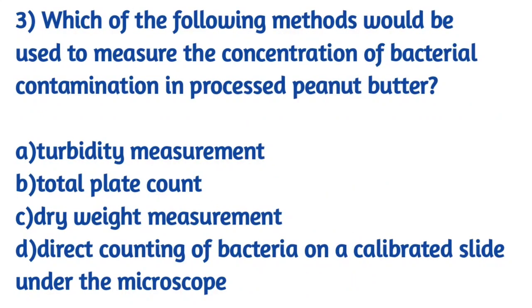Which of the following methods would be used to measure the concentration of bacterial contamination in processed peanut butter? In processed peanut butter, we need to measure the concentration of bacteria. Options are: turbidity measurement, total plate count, dry weight measurement, and direct counting of bacteria on a calibrated slide under the microscope.